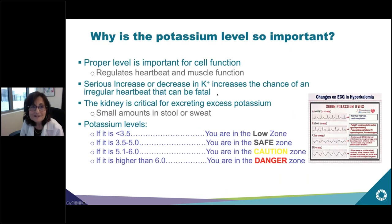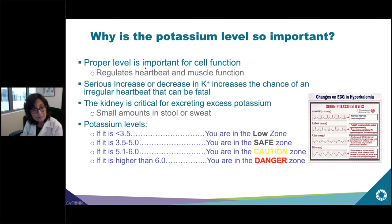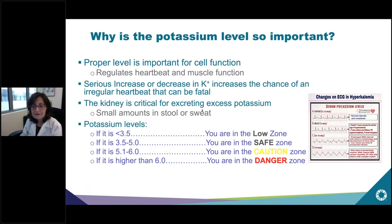The proper level of potassium is required for normal cell function. Most importantly, having the right level of potassium regulates your heartbeat and muscle function. Serious increases or decreases in potassium will increase the chance of an irregular heartbeat that can be fatal. The kidney is critical for excreting excess potassium, so if the kidney isn't working properly, you're going to have a problem with high levels of potassium.